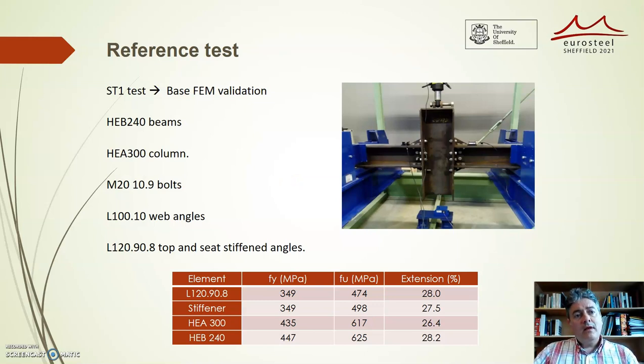The load cell and the actuator are located in the top of the column. The beam rotation was monitored through two inclinometers placed on the top of the beams.